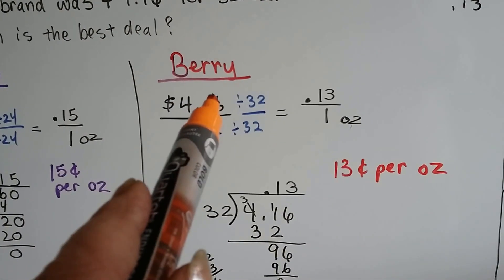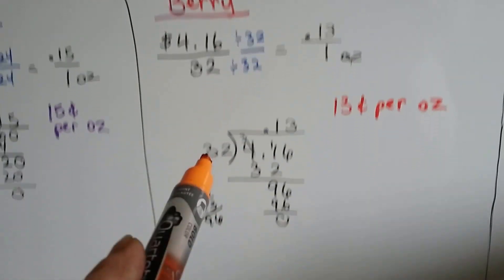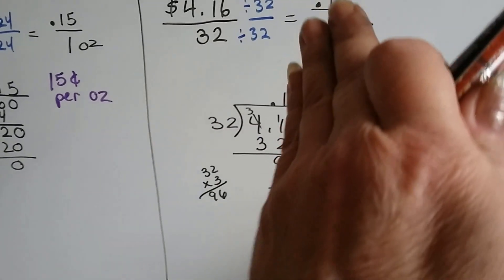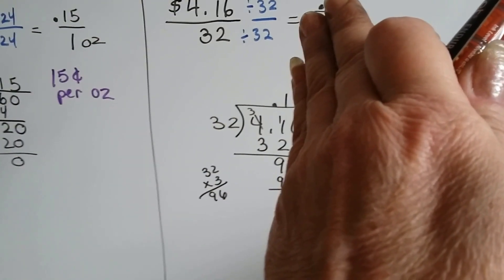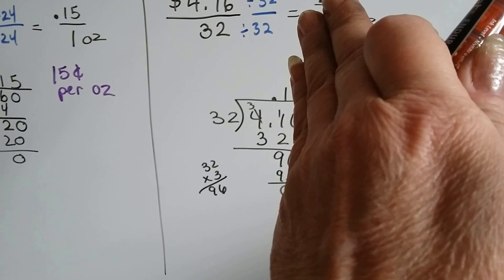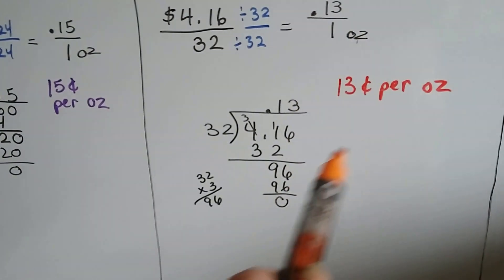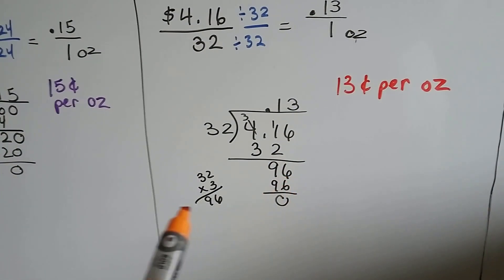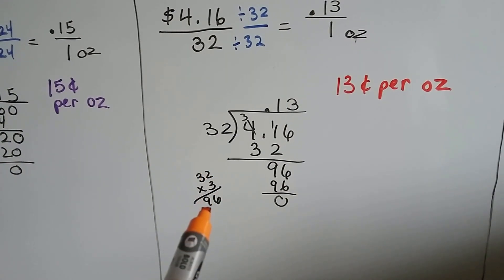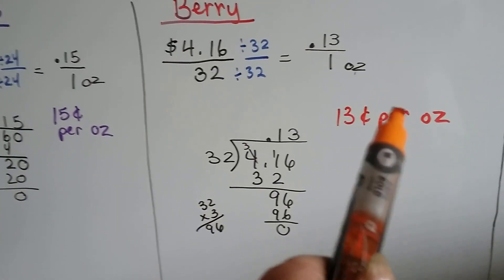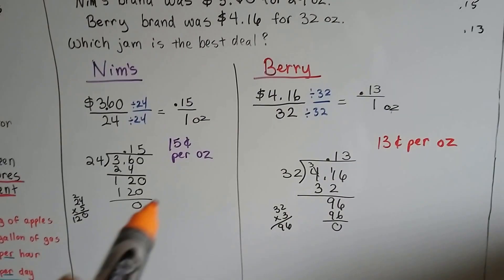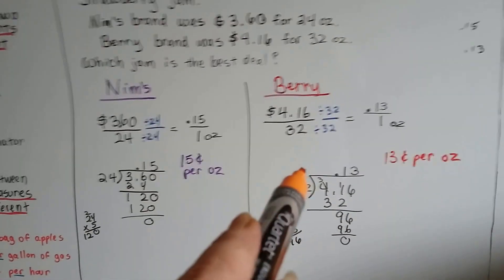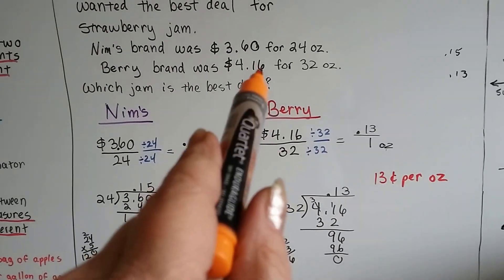$4.16 divided by 32: 32 goes into 41 one time. We subtract and get 9, then the 6 comes down. 32 times 3 is 96, so it's 13 cents per ounce. So what's the better deal? The Berry brand — she's going to save 2 cents per ounce.